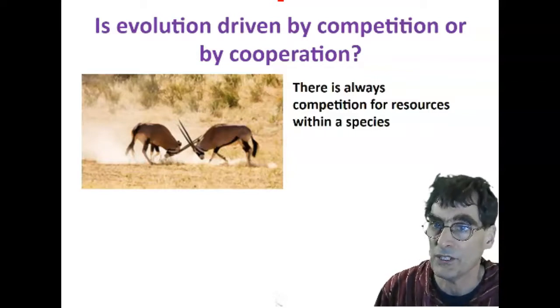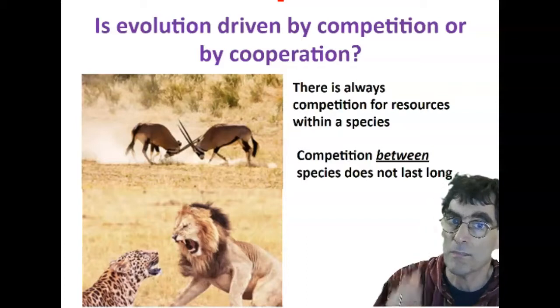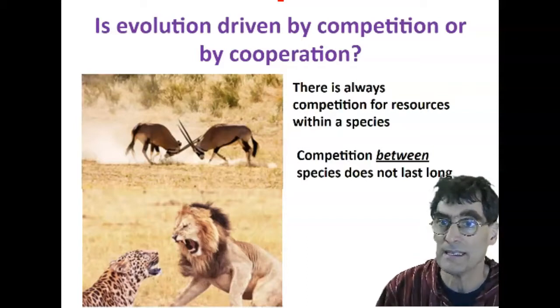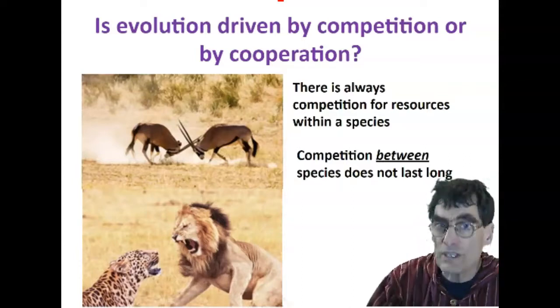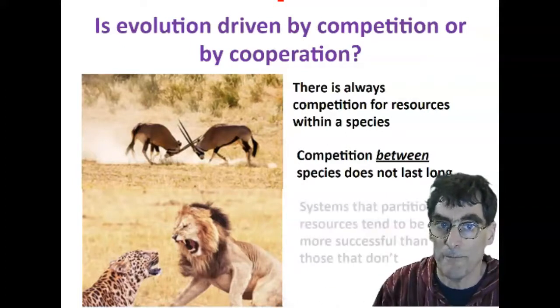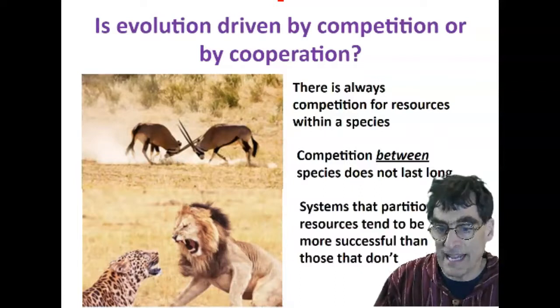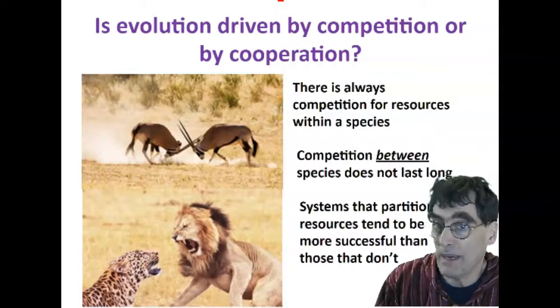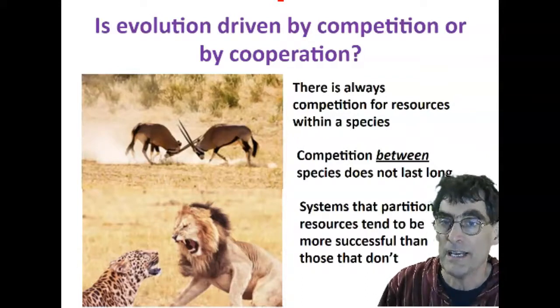But what about competition between species? Because what competitive exclusion tells us is that competition between species doesn't last very long. It gets evolutionarily wiped out. Because as it turns out, systems that end up partitioning their resources are going to do better than systems that don't. They're going to be more stable, and they're going to have an evolutionary advantage.